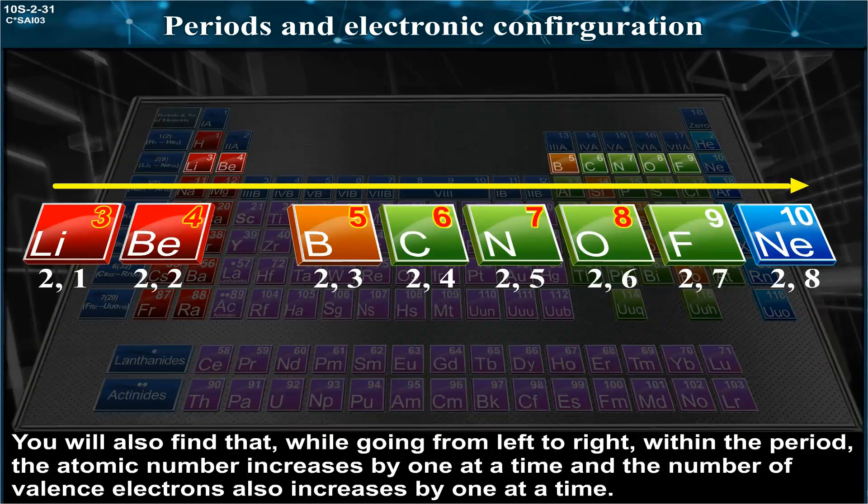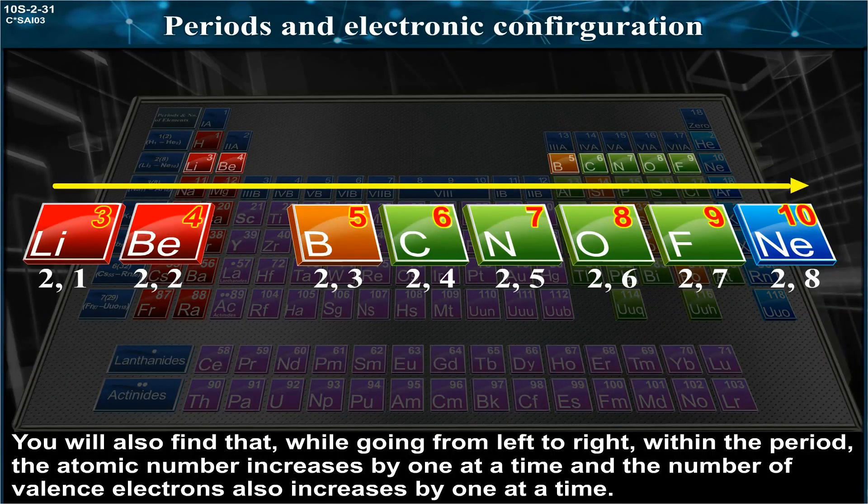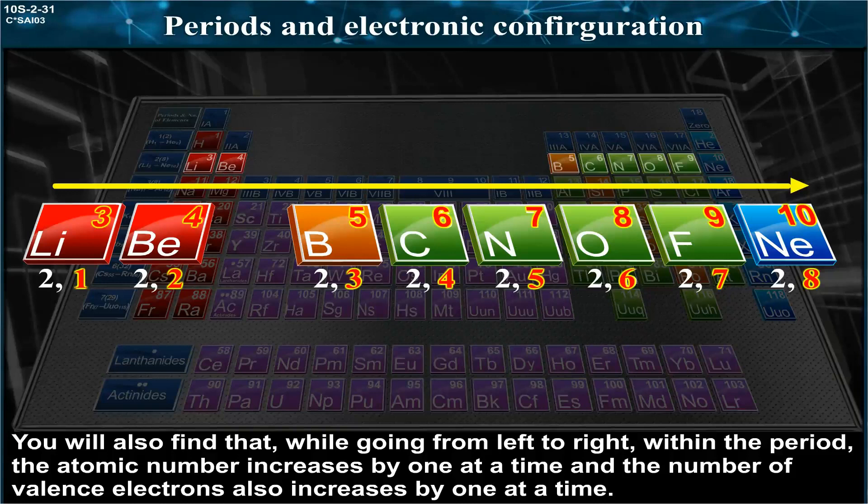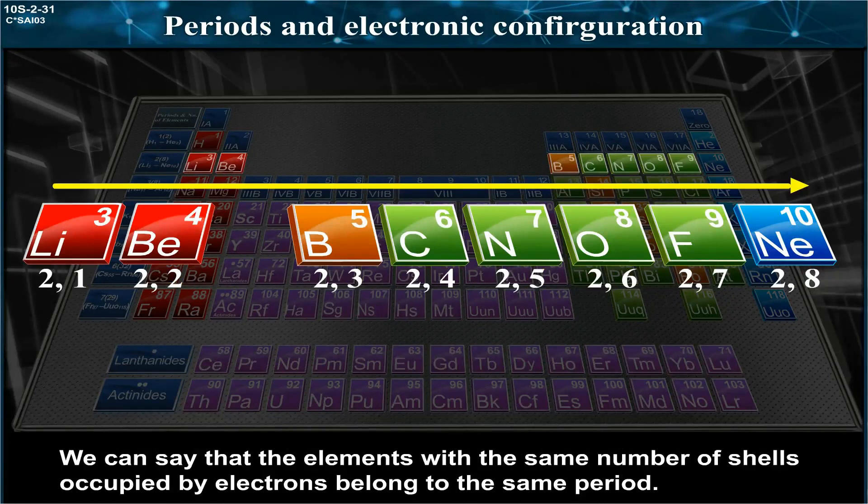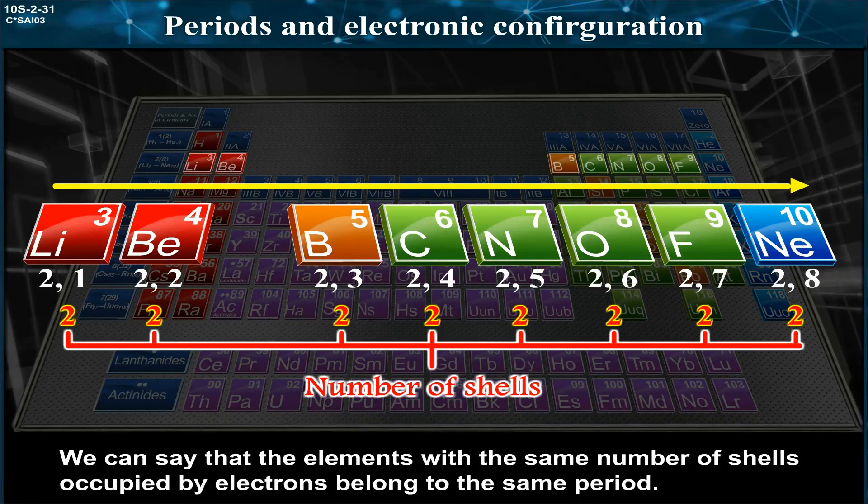The atomic number increases by one at a time and the number of valence electrons also increases by one at a time. We can say that the elements with the same number of shells occupied by electrons belong to the same period.